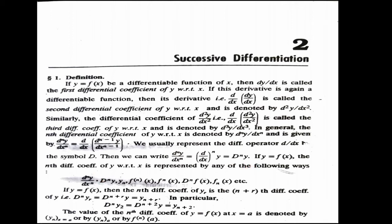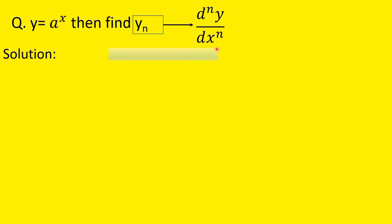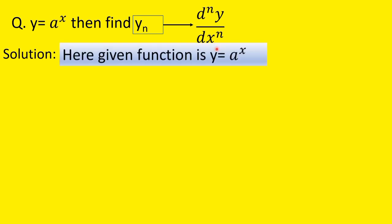To understand the concept of successive differentiation, let us take another example. Consider y = a^x. We need to find the nth derivative, that is yn = d^n y/dx^n. If we differentiate once, y1 = a^x log(a), since the differentiation of a^x equals a^x log(a). Again differentiating y1, we get y2 = a^x log(a) · log(a).